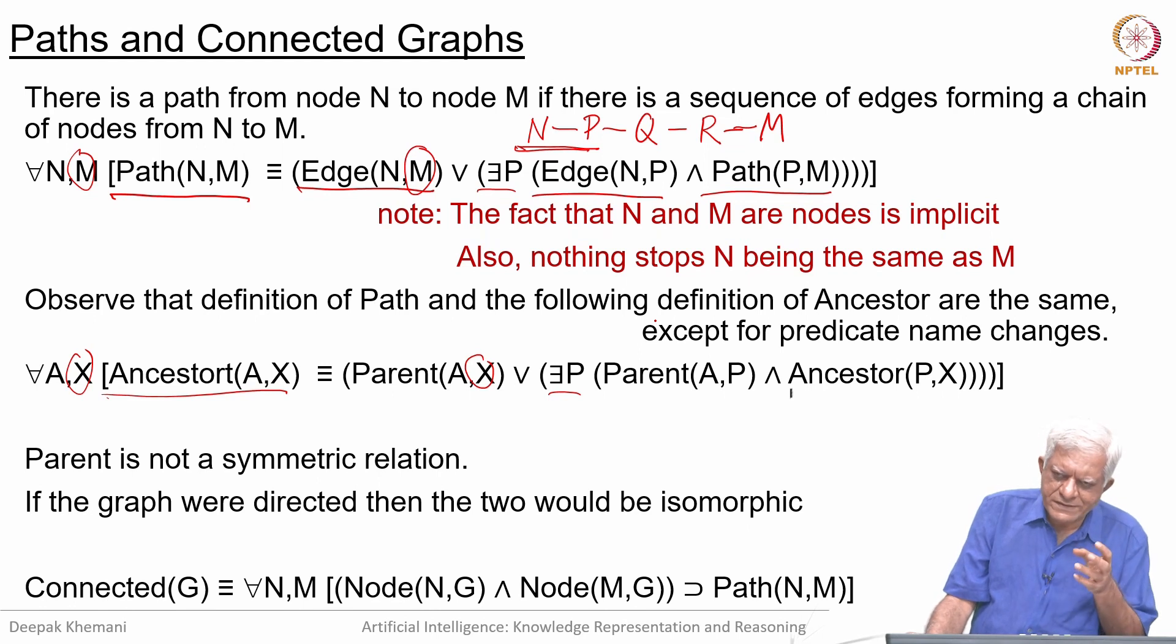Since we have introduced this graph as an abstract entity we can talk about properties of a graph. We can say that the graph is connected. What we mean by that is for all nodes in the graph, for all nodes N and M you choose any pair of nodes.